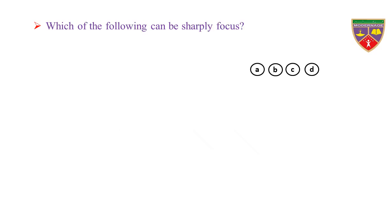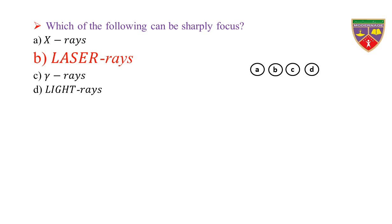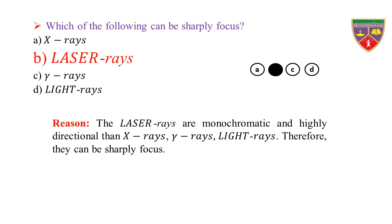Which one of the following can be sharply focused? Option A, X-rays; Option B, Laser rays; Option C, Gamma rays; Option D, Light rays. The key is Laser rays. Therefore, the correct option is B. Reason: laser rays are monochromatic and highly directional compared to X-rays, Gamma rays, and Light rays. Therefore, they can be sharply focused. Hence, laser rays can be focused sharply.